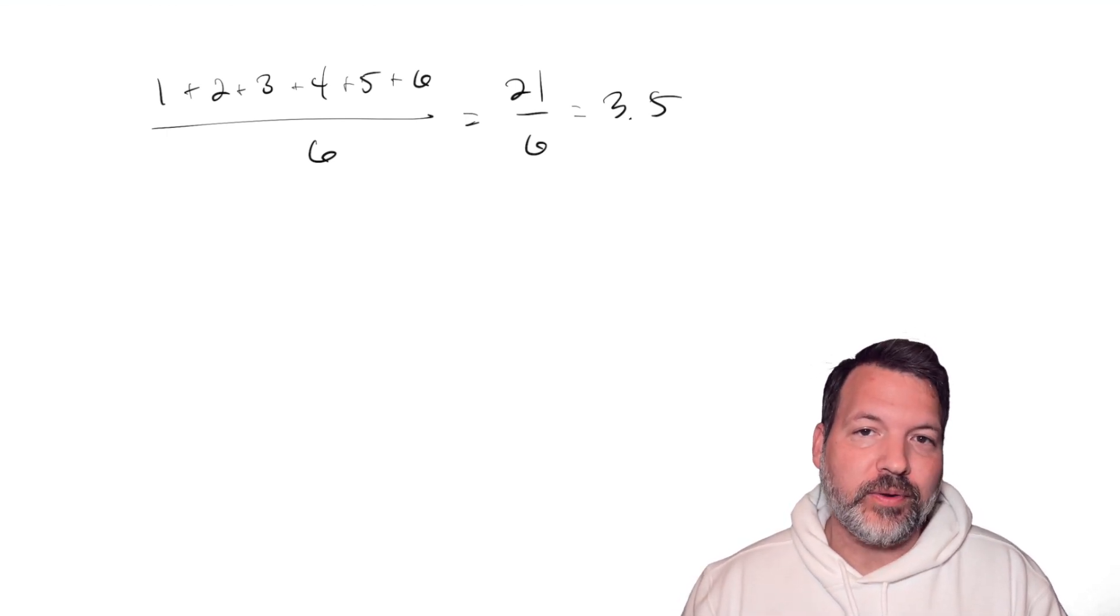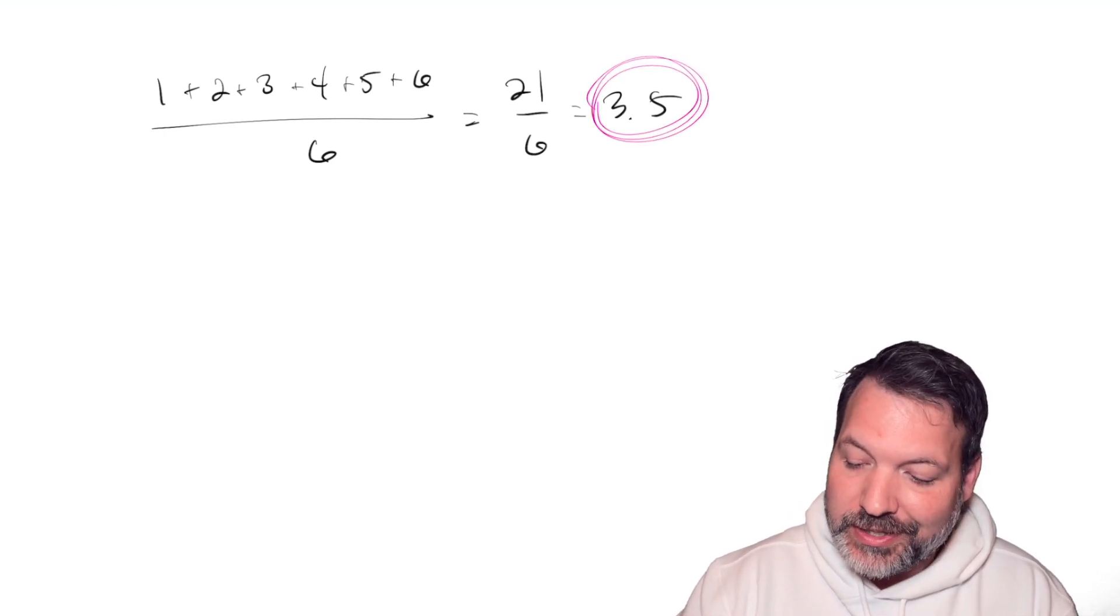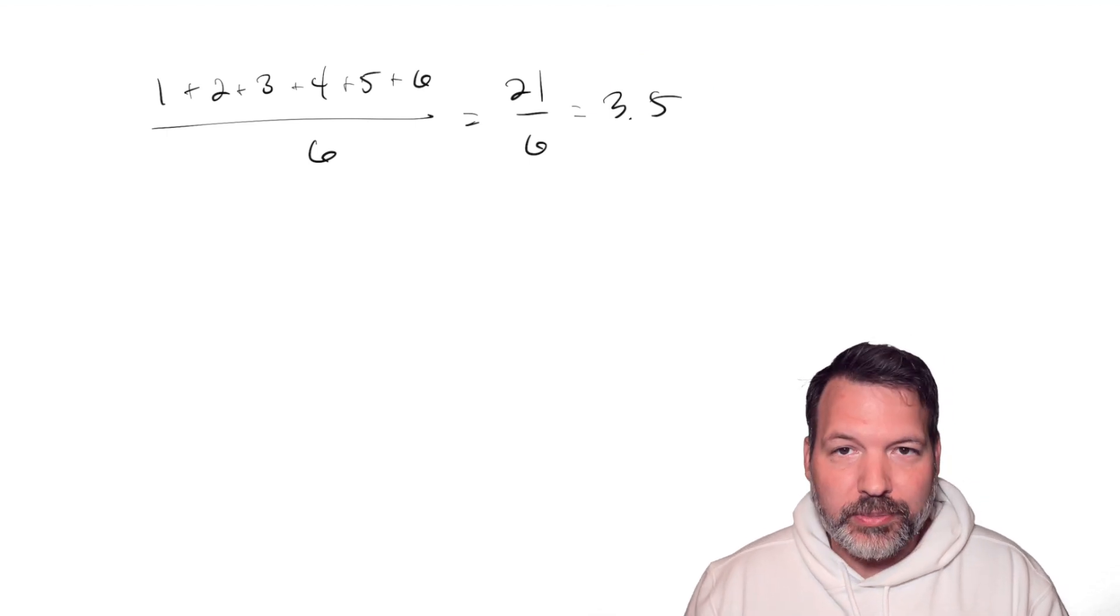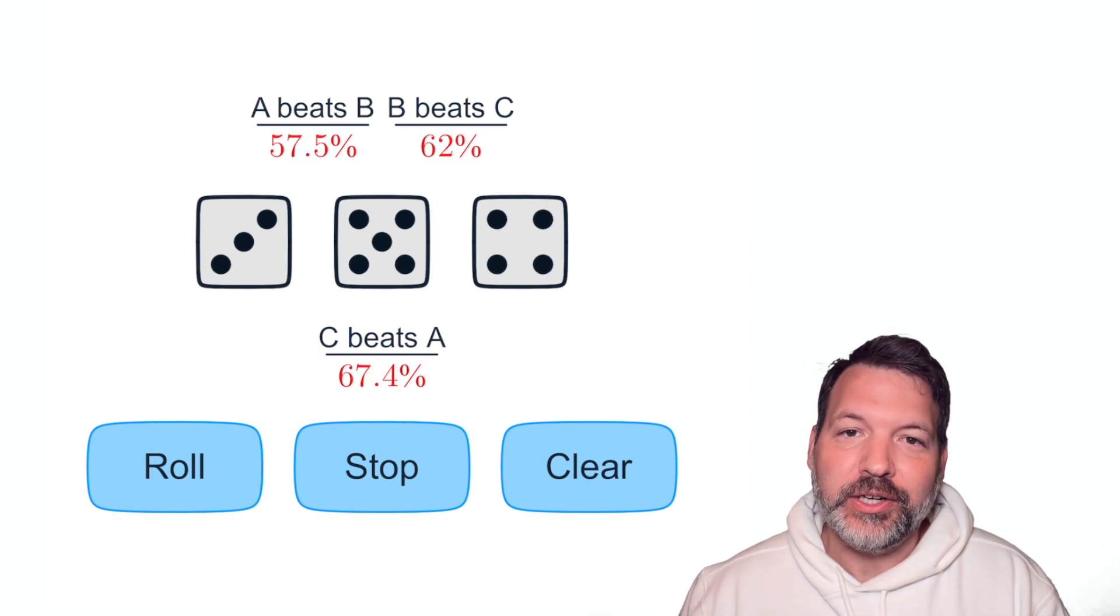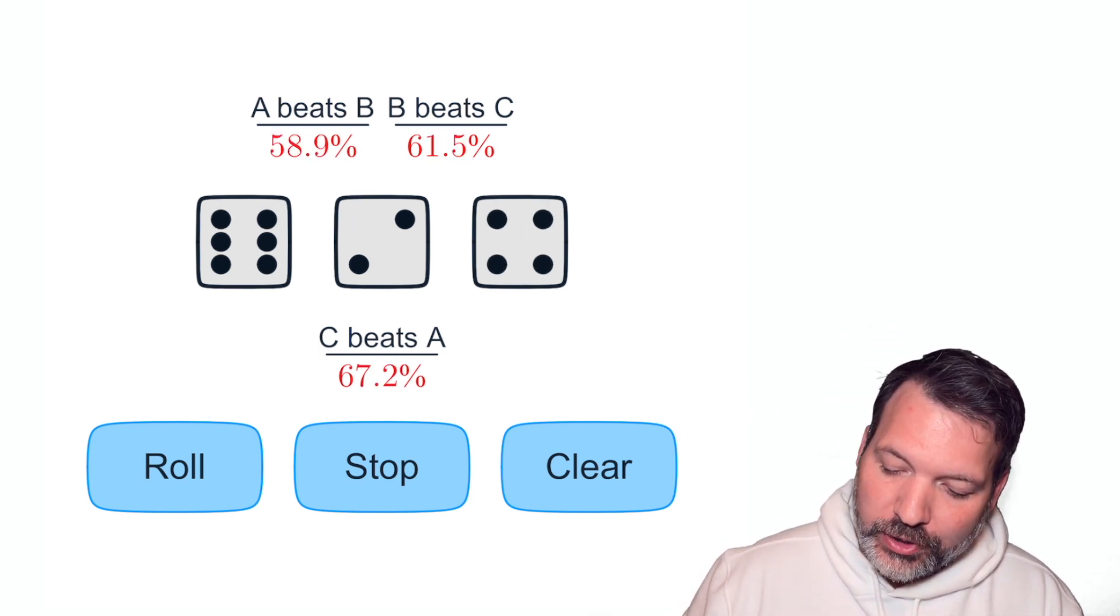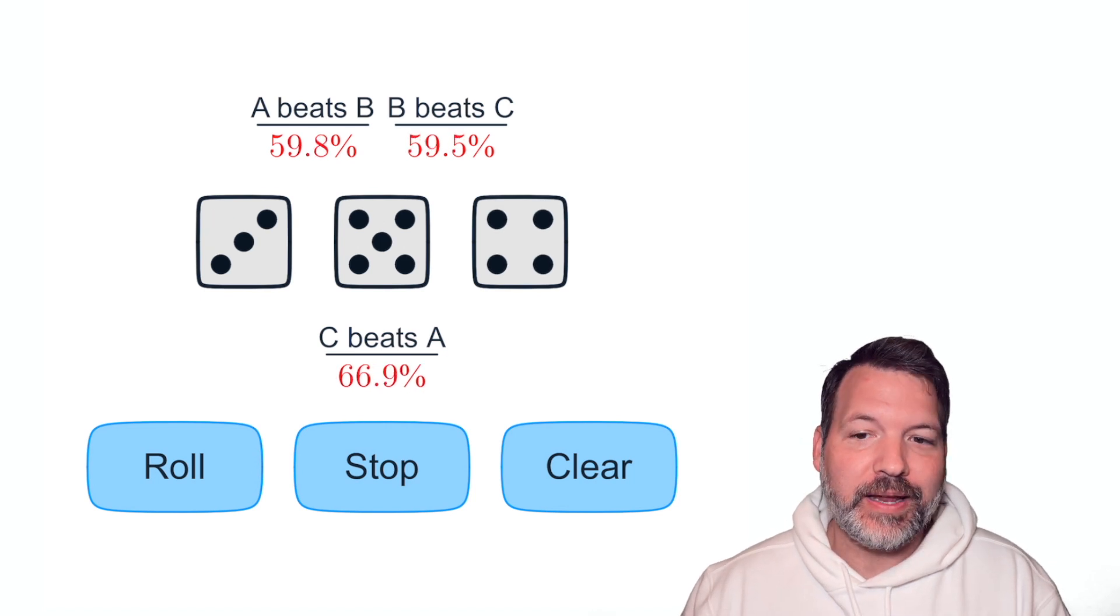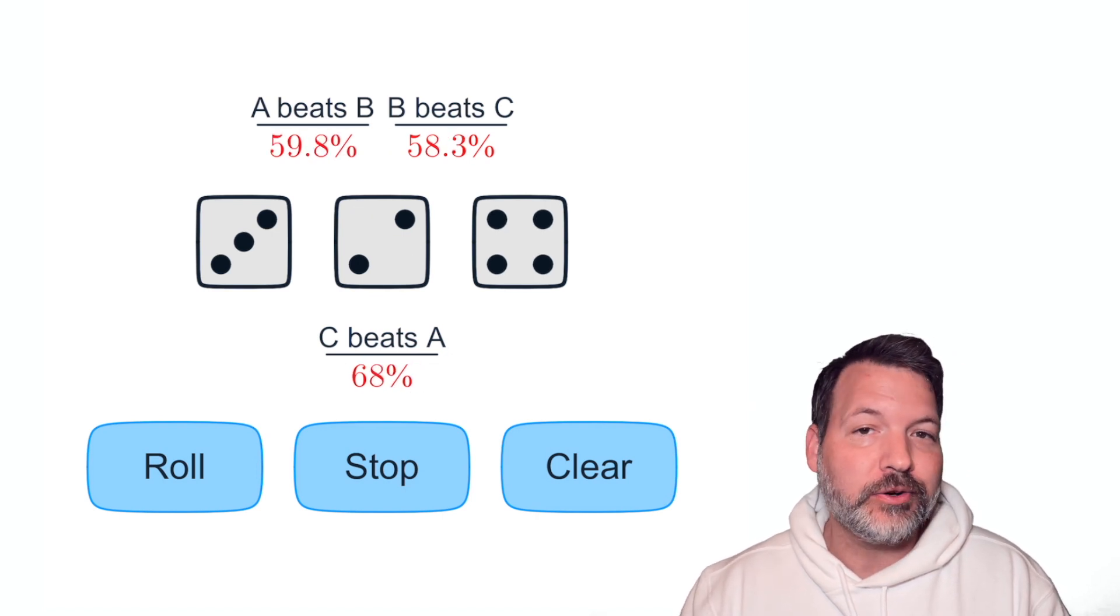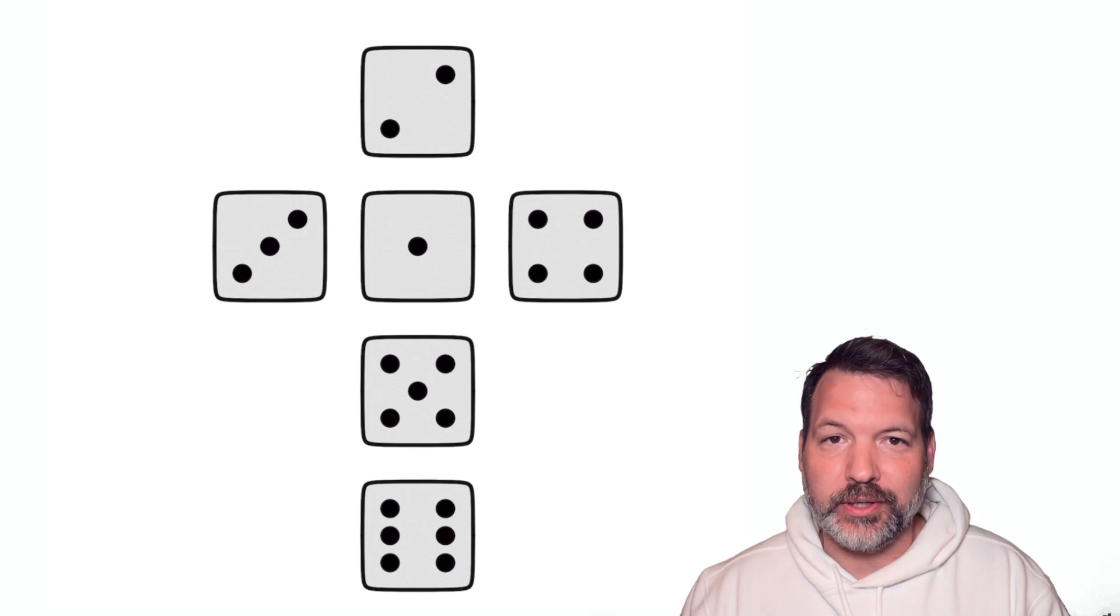A weighted die is gonna deviate from this. As we roll it over and over again, we're gonna notice that the expected value does not average out to 3.5. Instead, it averages out to something different, but likely something higher. That's not what's going on with our intransitive dice over here. If you took a look at the actual rolls, and you average them all together, you would find that each individual die does have an expected value of 3.5. These are not weighted dice, but obviously that doesn't mean that they are standard dice.